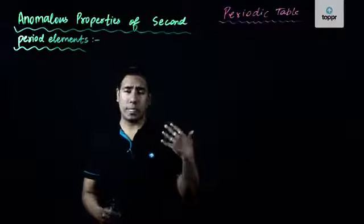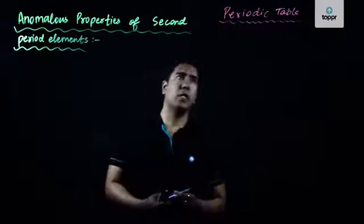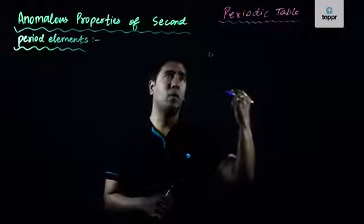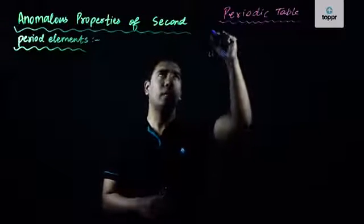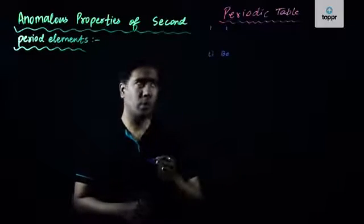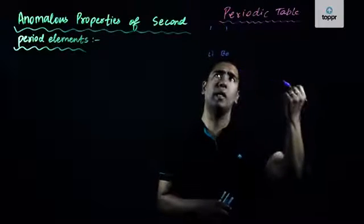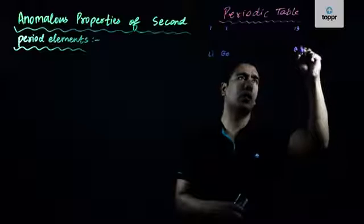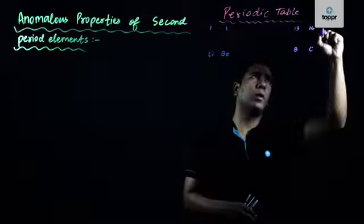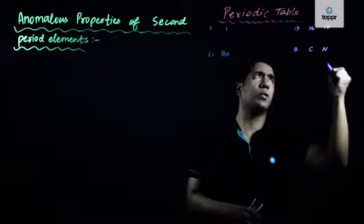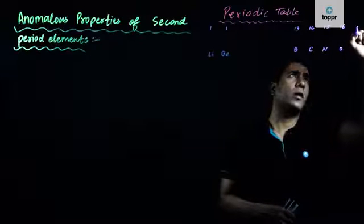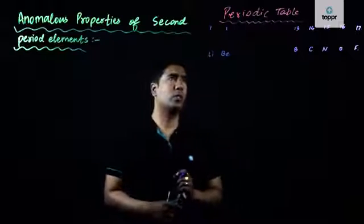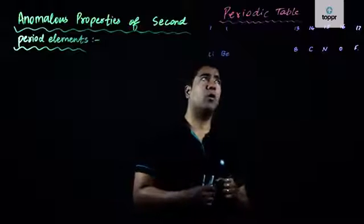In the case of second period elements, it starts with lithium in group 1, then beryllium in group 2. After that, group 13 has boron, group 14 has carbon, group 15 has nitrogen, group 16 has oxygen, and group 17 has fluorine. We will not be talking about the noble gases in this specific case, so we will be dealing with these second period elements belonging to all these different groups.